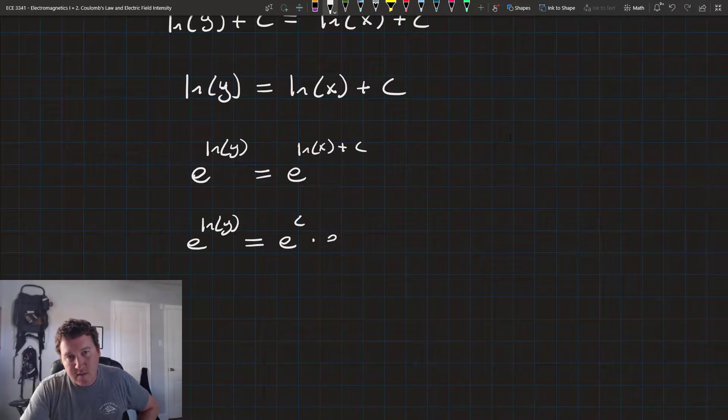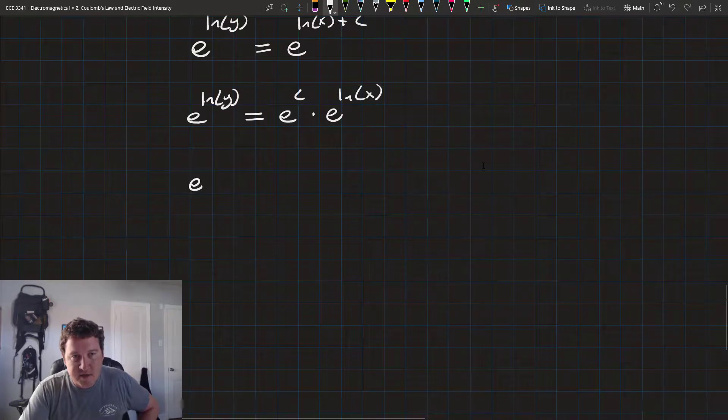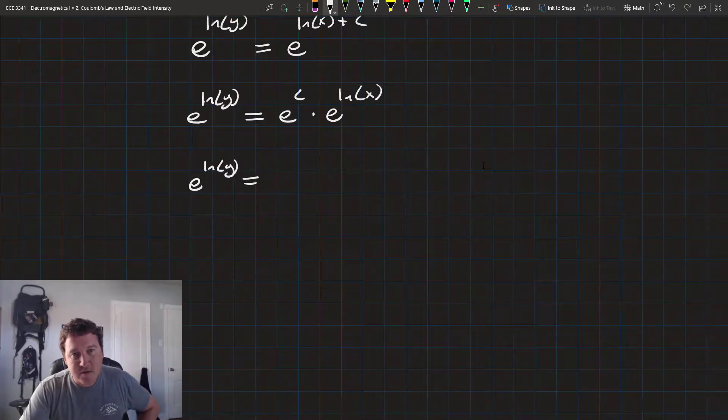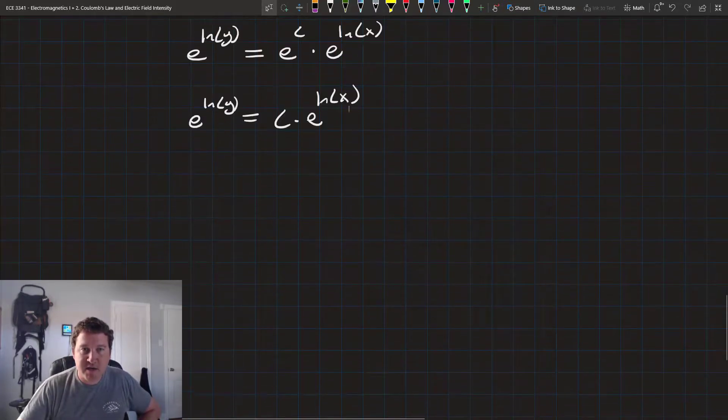Remember that adding exponents is the same as multiplying. So, e to the c times e to the natural log of x. E raised to some constant is itself just a constant. So, one more round of simplification here, it's going to be equal to c times e to the natural log of x.